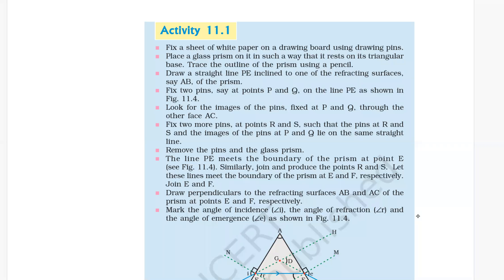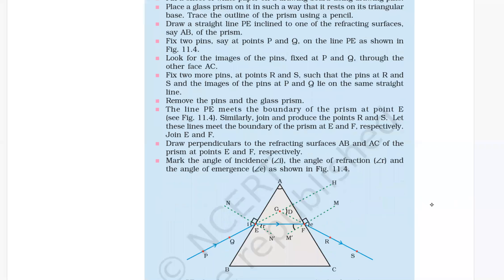Activity 11.1: Fix a sheet of white paper on a drawing board using drawing pins. Place a glass prism on it in such a way that it rests on its triangular base. Trace the outline of the prism using a pencil.